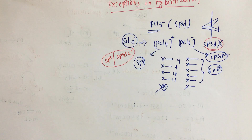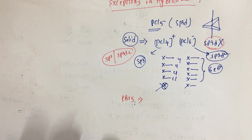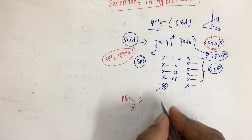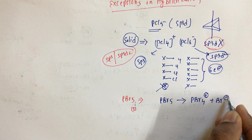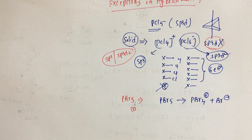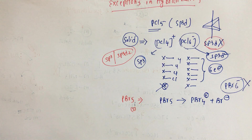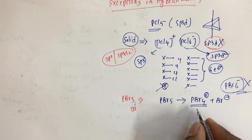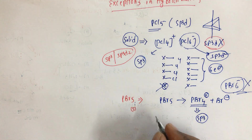Next is PBr5. In the liquid state, it is also trigonal bipyramidal. In the solid state, PBr5 exists as PBr4+ and Br-. Unlike PCl5, PBr6- does not exist because the size of bromine is bigger, so PBr6- cannot form. Therefore, the hybridization of PBr5 in the solid state is sp3.